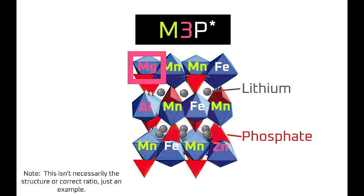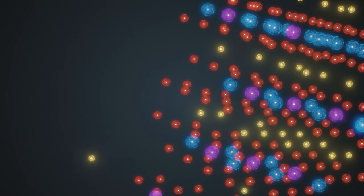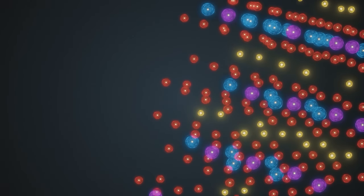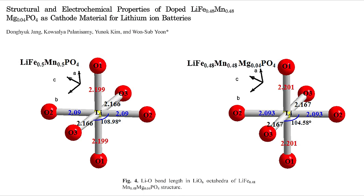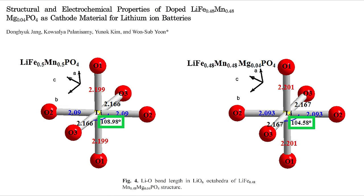Magnesium has another beneficial effect for LMFP: it improves the ionic conductivity of LMFP, which tends to be poor compared to LFP. By ionic conductivity, I mean how quickly and easily lithium ions can move through the cathode crystals when the battery cell is charged or discharged. Magnesium improves ionic conductivity by modifying the bond lengths and angles within the crystal structure. The image on screen shows a pure LMFP octahedron on the left and a magnesium-doped LMFP octahedron on the right. One of the angles on the LMFP is 108.98 degrees, and the corresponding angle on the magnesium-doped version is 104.58 degrees.